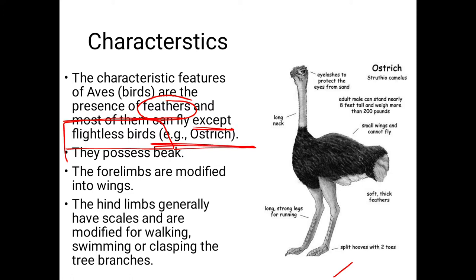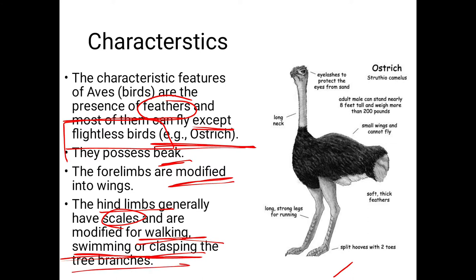They possess a beak — all birds have a beak. The forelimbs are modified into wings. The hind limbs generally have scales and are modified for locomotion. With the hind limbs, birds can walk, swim, clasp branches, and fly easily.